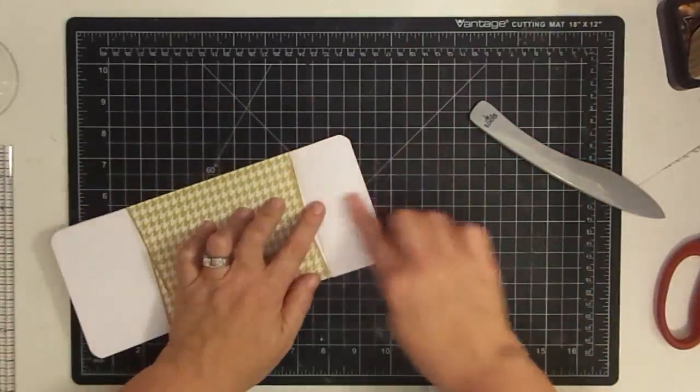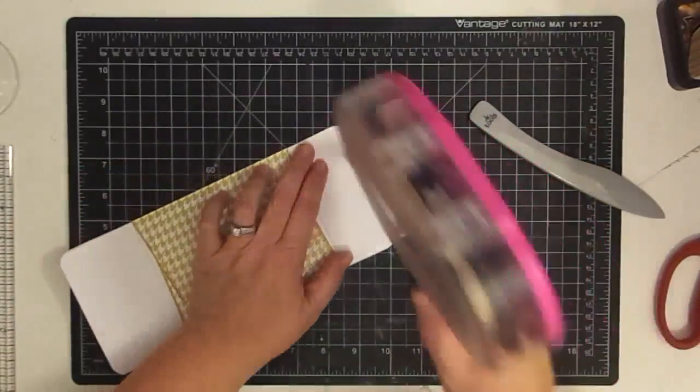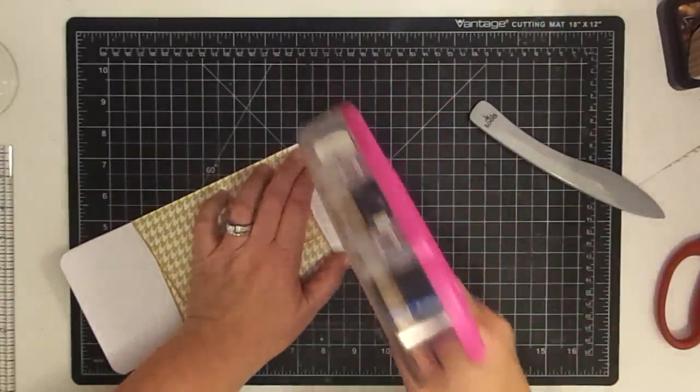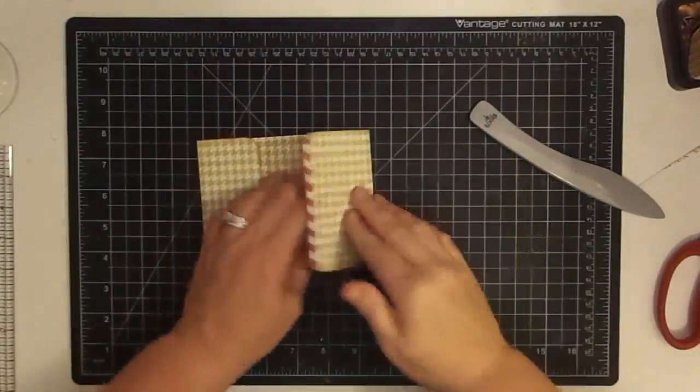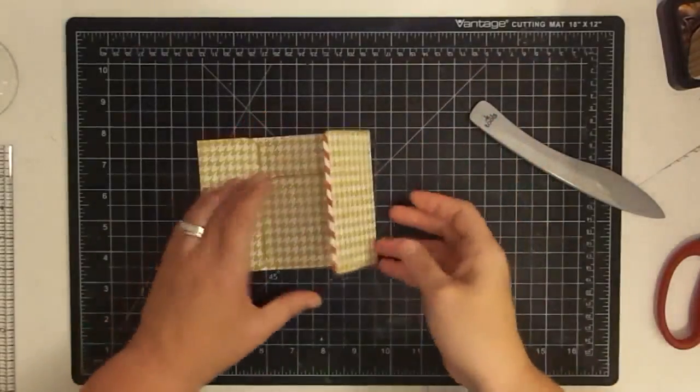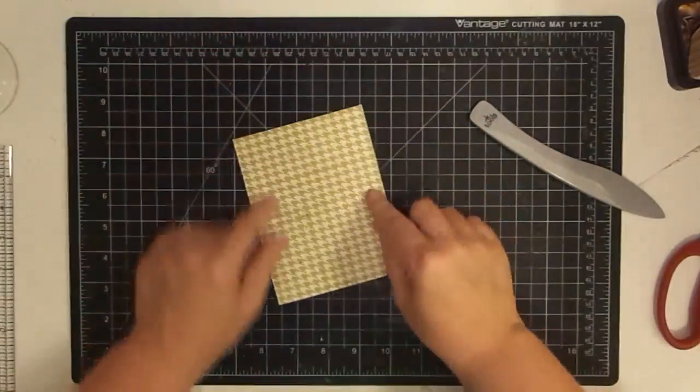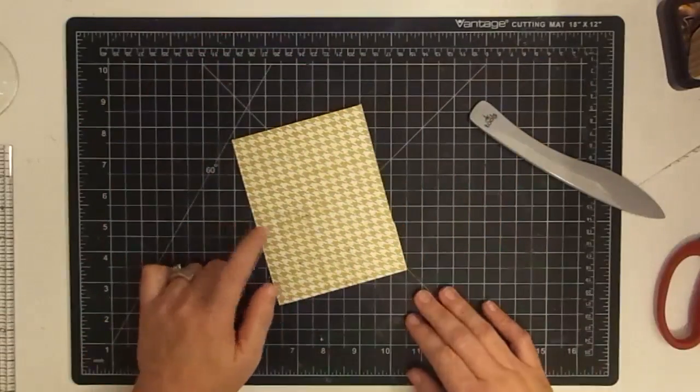For this part, you can go ahead and stick this down, no problem. We're not going to tape anything here because we're going to do something fun to close this guy up. But now we need to decorate the front. See, now we have the size of an A2 size card.